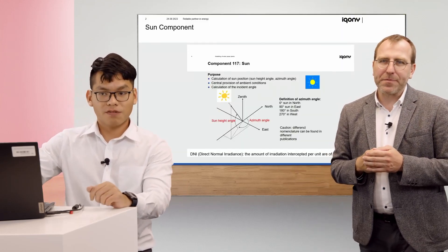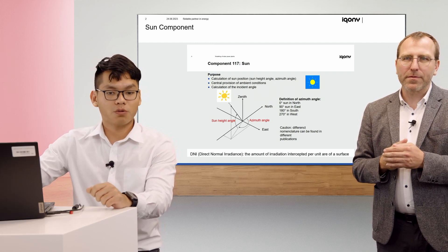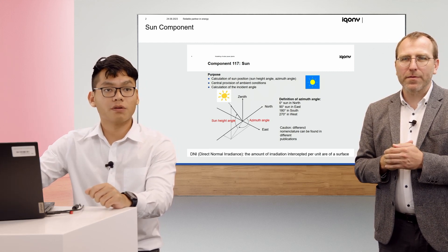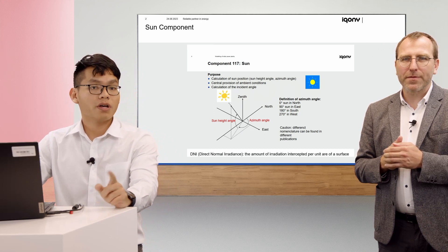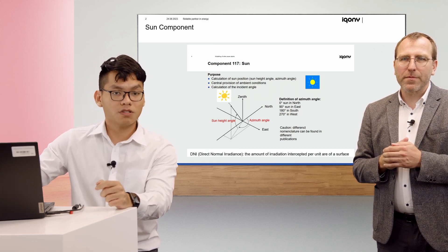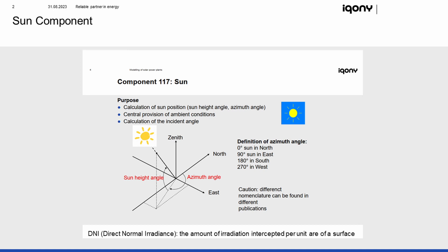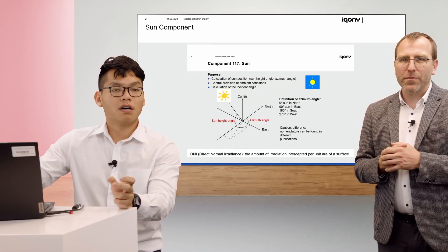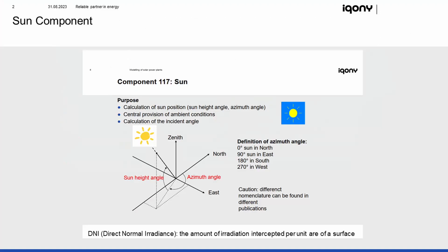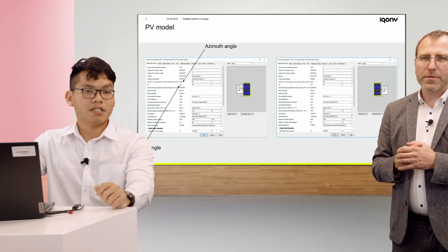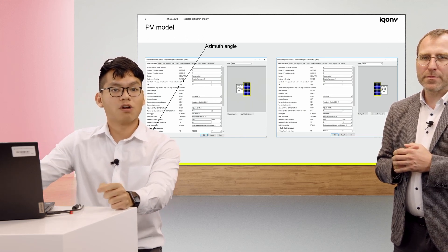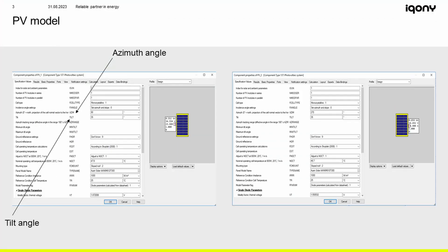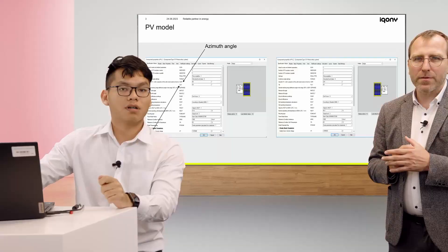In Epsilon we have the sun component, which is one of the most important factors when modeling the PV system, as you can see here. We have the sun angle, the azimuth angle, and one of the most important parameters to remember is the DNI — Direct Normal Irradiance — which is the amount of irradiance intercepted per unit area of your surface, because it may affect your electricity production. Then we move to the PV model — the photovoltaic system, or what we usually call the solar module or solar panel. Here are two tables showing some specification values in Epsilon for the solar panel shown on the slide.